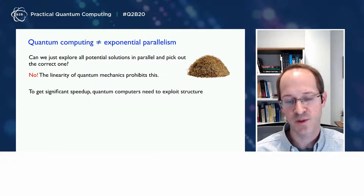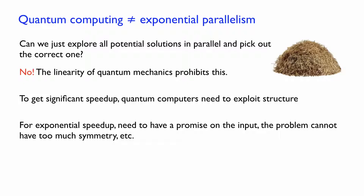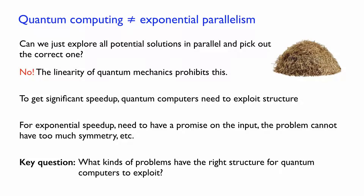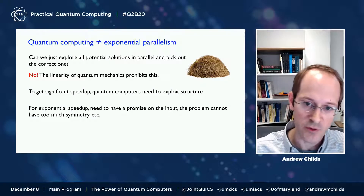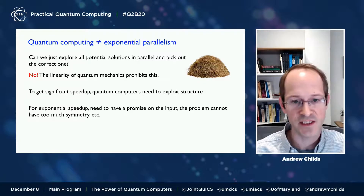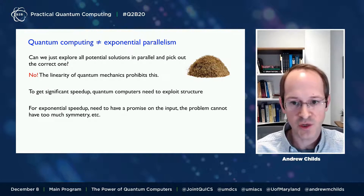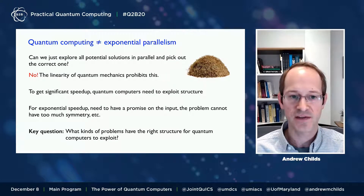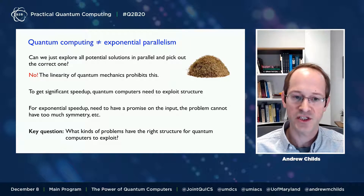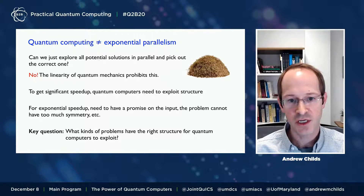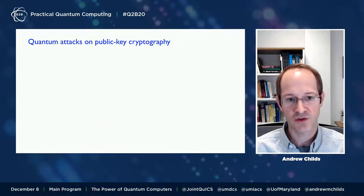To get significant speedup from quantum computers, we really need to exploit structure in problems. Quantum computers only give us an advantage for particular kinds of problems, so what we'd like to understand is what those problems are and what structures are needed. For example, it's known that if a problem is too symmetric — fully symmetric — then it's not possible to have exponential quantum speedup. A recent result my group was involved in shows that other kinds of symmetries, like the symmetries of graphs, can also prevent exponential quantum speedup.